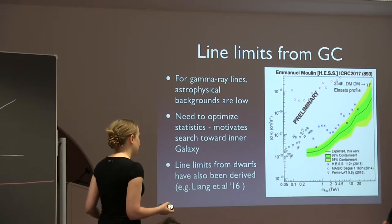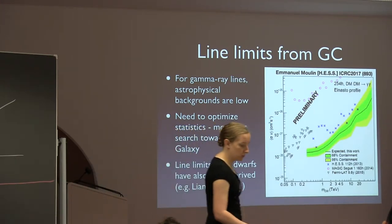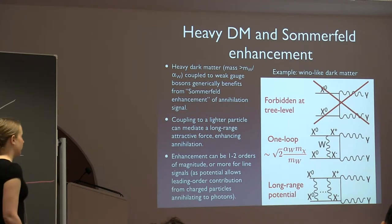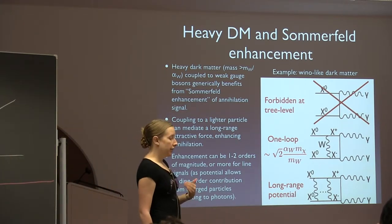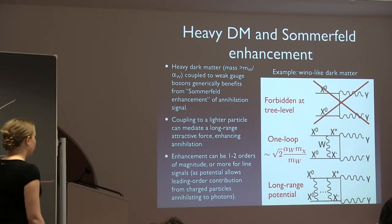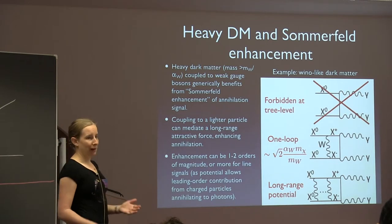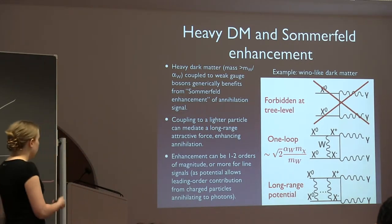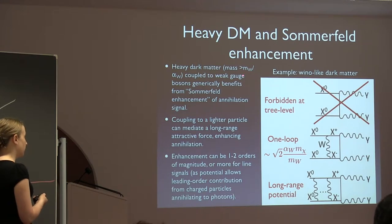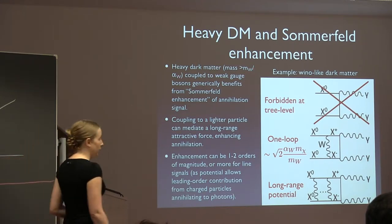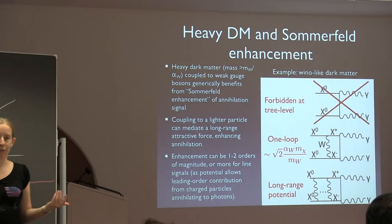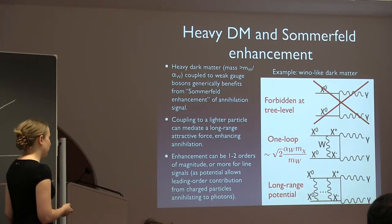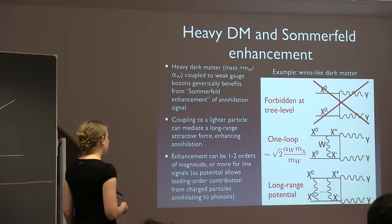There's a caveat for heavy dark matter. As discussed, Sommerfeld enhancement is important once the dark matter mass becomes larger than the mass of the weak gauge bosons divided by the coupling. For M_W of 80 GeV and alpha of about 1/30, this happens for dark matter heavier than about 2.5 TeV. This gives a Sommerfeld enhancement to annihilation due to the attractive potential mediated by exchange of W bosons.